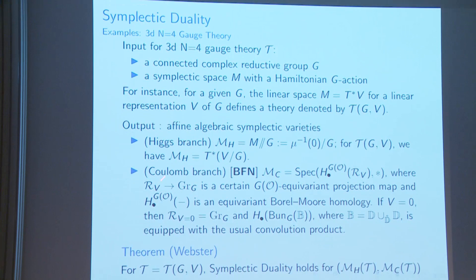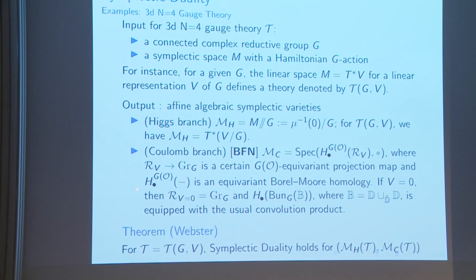Once you have this definition, you can try to prove symplectic duality. Indeed, Webster proved symplectic duality in the case when T is T(G,V) with input data of G and representation V.